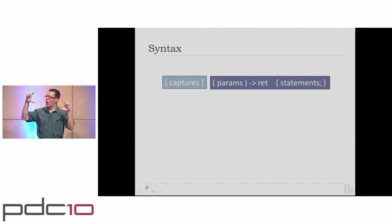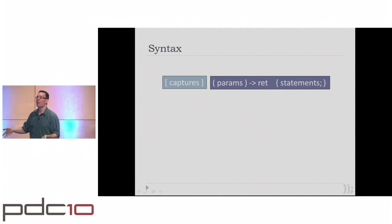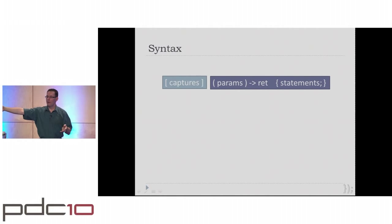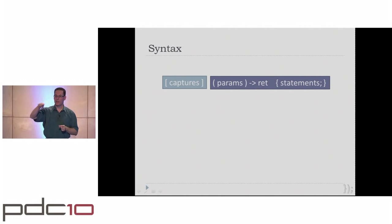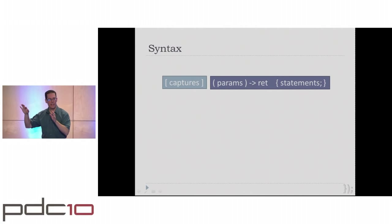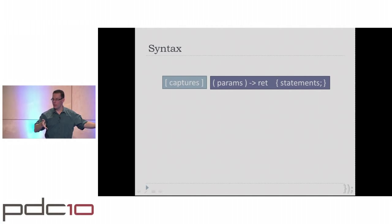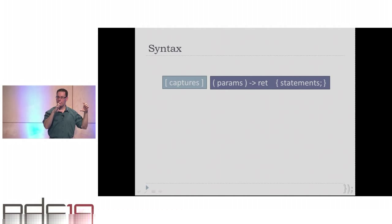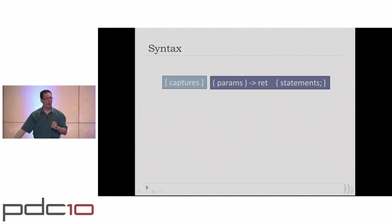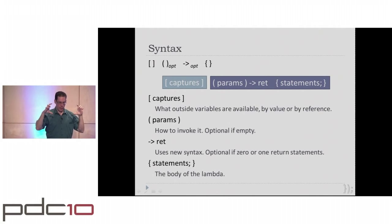The basic syntax starts with some square brackets — optionally empty — representing the capture list of local variables you want to capture. If you're in a member function, 'this' may be one of those. Then you have your parameters, the new-style C++0x trailing return type at the end if needed, and then the function body — as much code as you want.